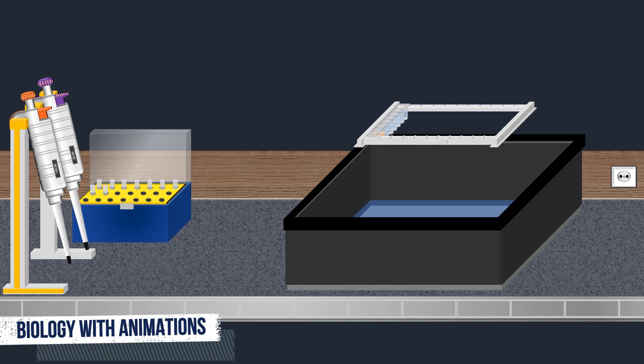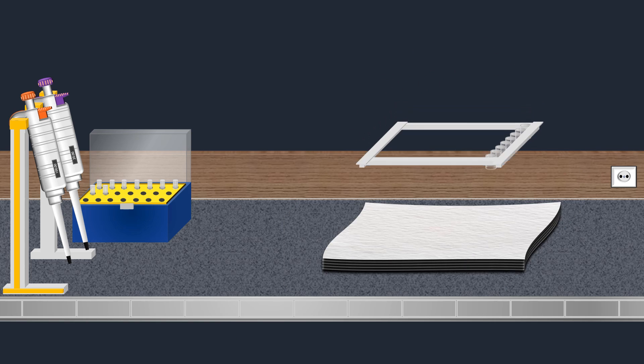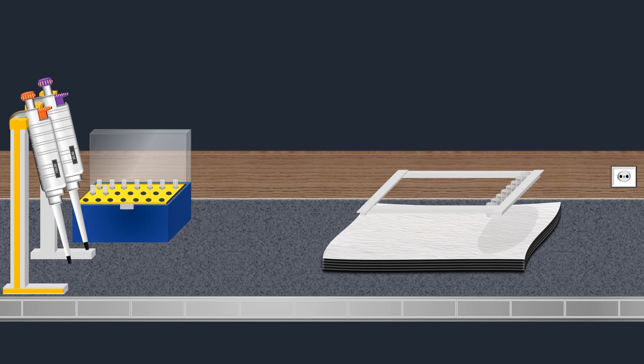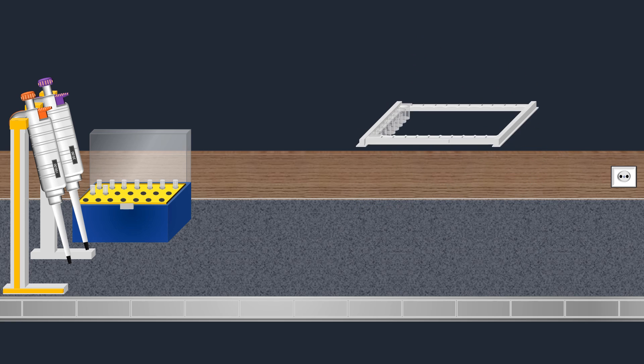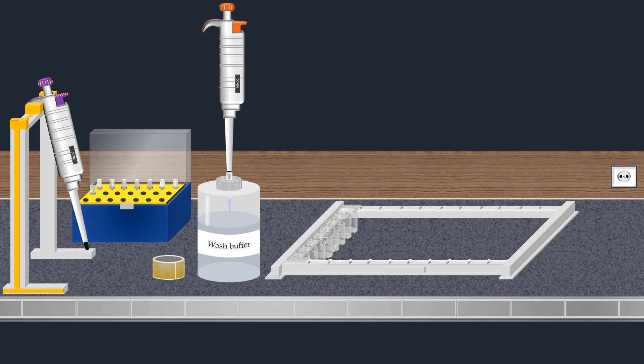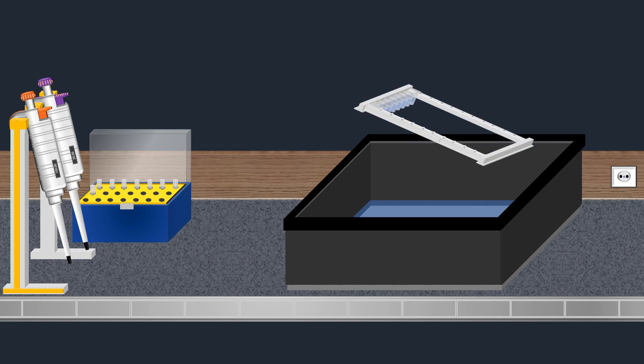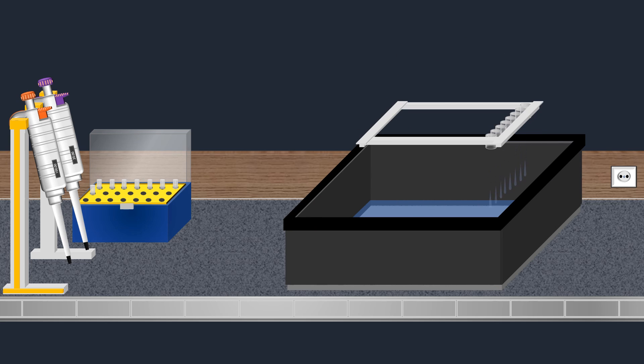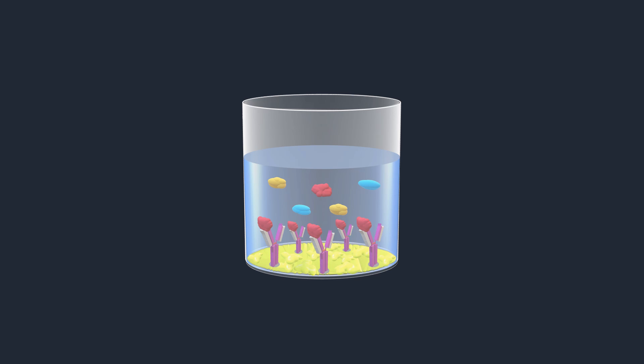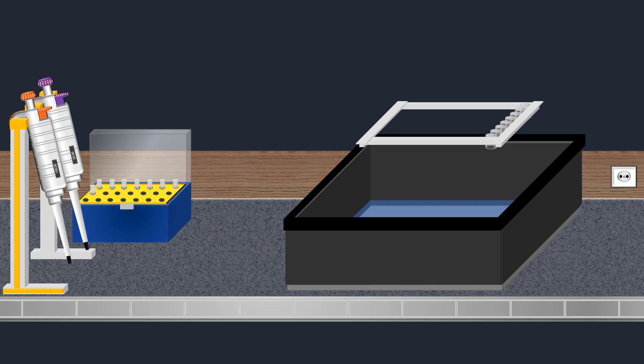Next, the solutions are removed from the wells, ensuring the elimination of any remaining liquid. The next critical step is to perform a thorough wash to remove any unbound substances. The washing step effectively removes both unbound substances and unbound TSH, leaving only the specific antibody hormone complexes.